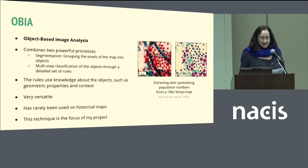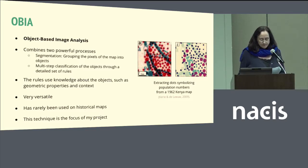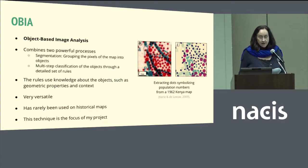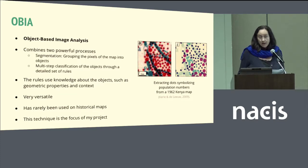The object-based image analysis, or OBA, is a method used extensively in the analysis of satellite and LIDAR imagery. That approach combines two powerful processes: first, the segmentation, where the pixels of the map are grouped into objects, and then a multi-step classification done at the object level using a series of detailed rules. The rules use knowledge about the objects, such as their geometric properties and their context, to decide to which class they belong. That method is quite versatile, however there seem to be very few examples where it has been used on historical maps. Because I thought OBA might have real potential for this type of materials, I chose to focus on it in this project.